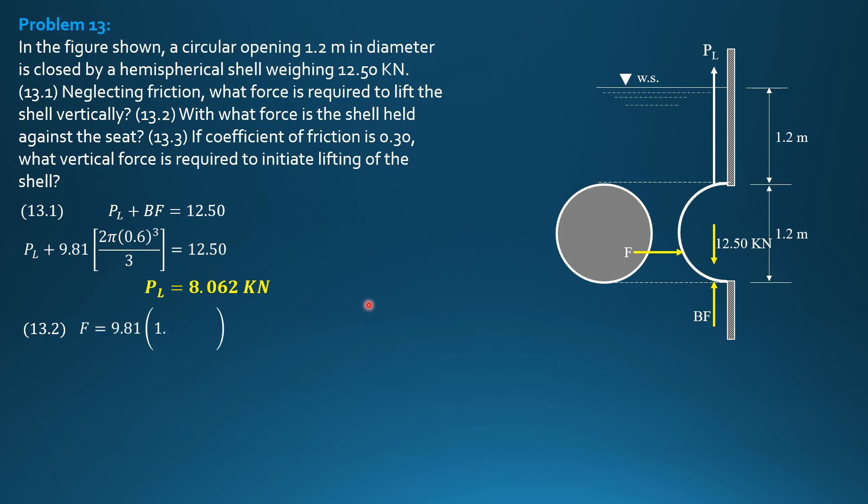So, 9.81, barred H, 1.2 plus 1.2 over 2, area pi 0.6 square, area of the circle. So, it will be pushed towards this opening and the seat of the opening. F is 19.97 kN.